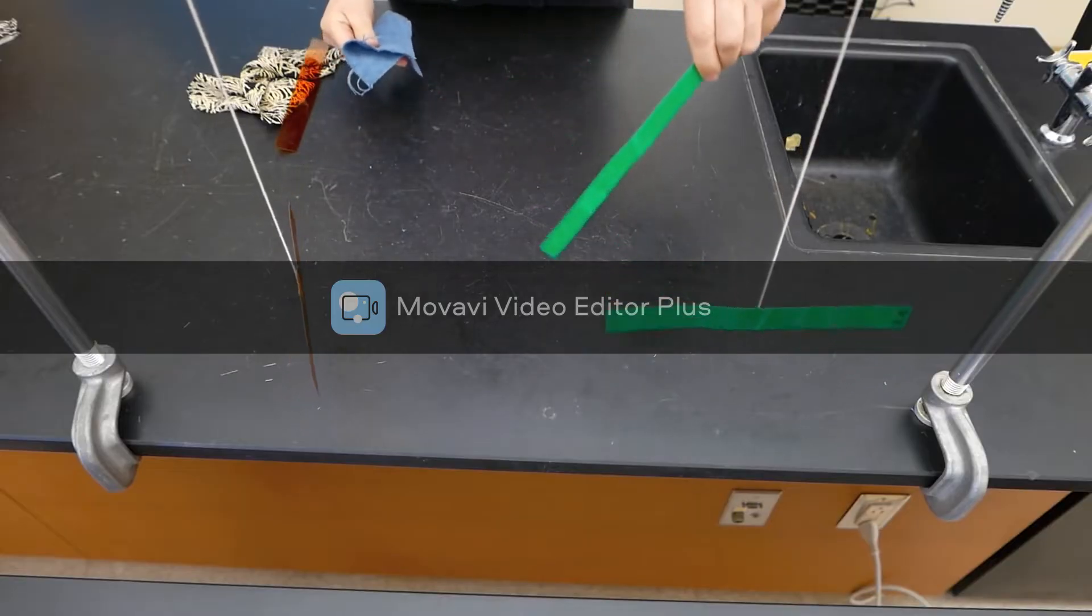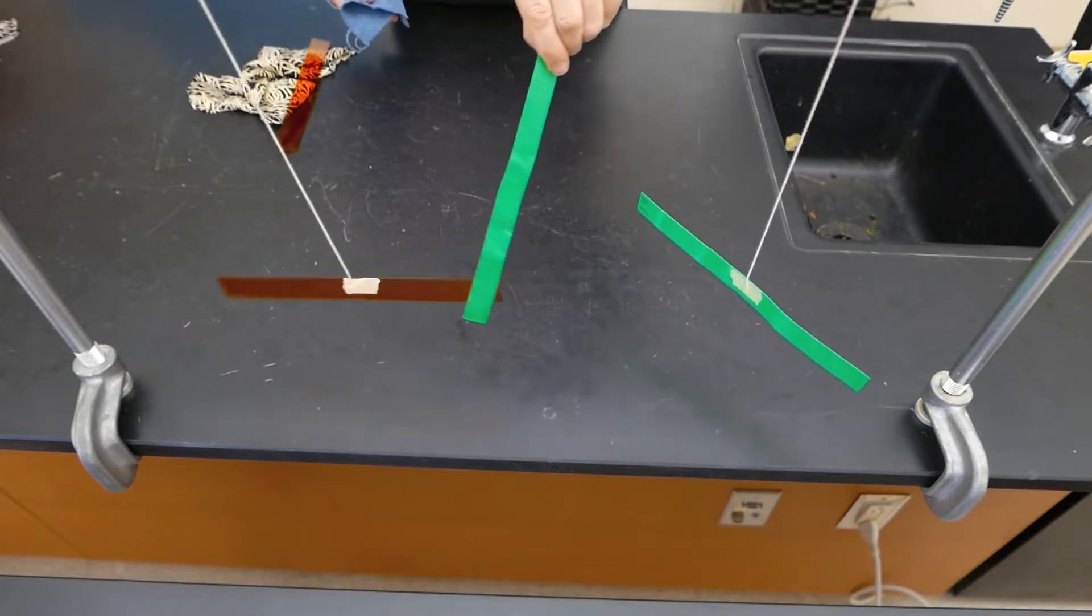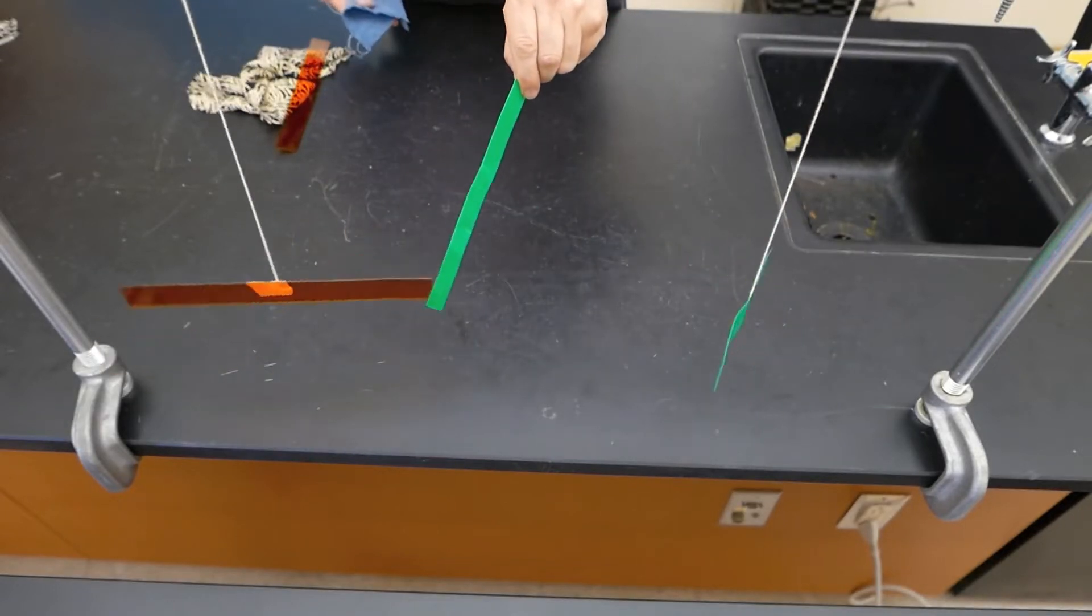Now, the wool can make it negatively charged. We see it's repelling that strip. And when I get it near the acetate, we see that it attracts it.